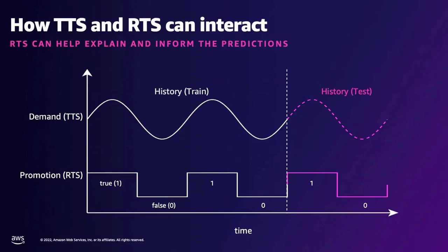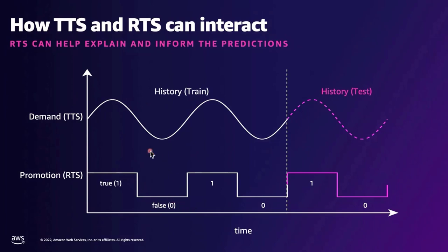This slide reinforces how target time series and related time series interact. We have historical demand data with ebbs and tides in the target time series. Imagine a promotion — during active periods, the promotion value is set to 1 or true, and when off, it's set to 0. Visually, when the promotion is true it stimulates demand, and when false, demand drops. This shows how you might visualize those interactions.